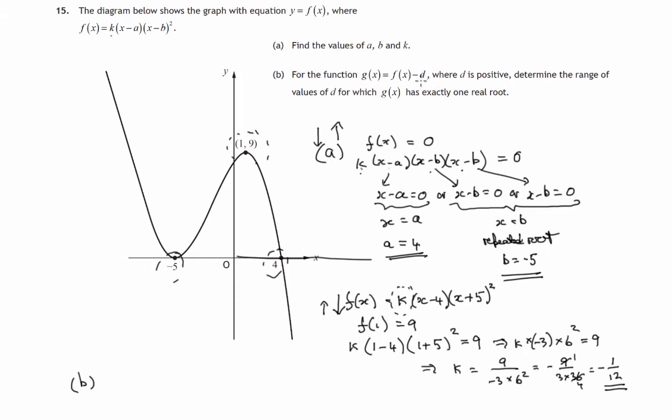In other words, we're taking all the heights on this graph and subtracting a number. For instance, we could be moving them all down 1 if d was equal to 1 or down 2 if d was equal to 2 and so on. So this graph is sliding downwards. And we have to determine the range of values of d...